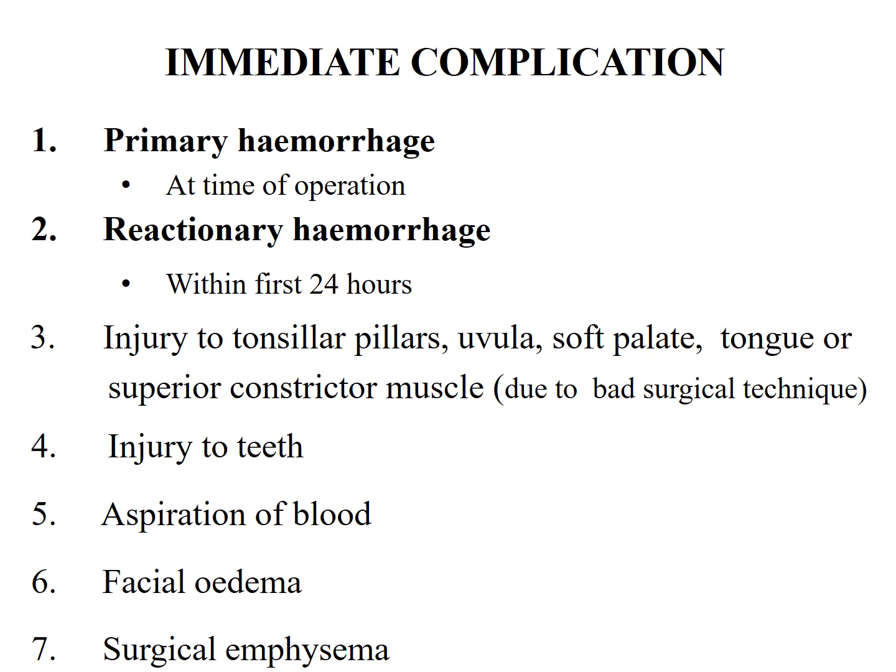Complications may be immediate or delayed. The most important are hemorrhages: primary hemorrhage occurs at the time of operation, and reactionary hemorrhage occurs within the first 24 hours. Post-tonsillectomy bleed is a surgical emergency and everyone should know how to manage it. Other immediate complications include injury to the tonsillar pillars, uvula, soft palate, tongue, or superior constrictor muscle; teeth injury; aspiration of blood — prevented by using a cuffed endotracheal tube and a throat pack before surgery; facial edema; and surgical emphysema.